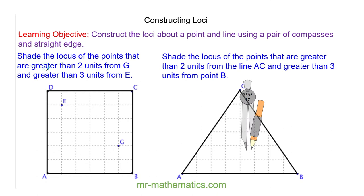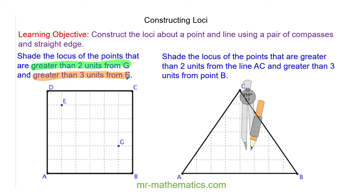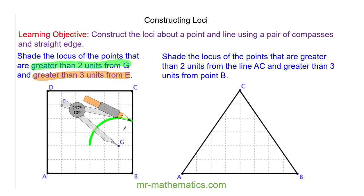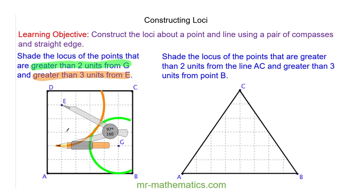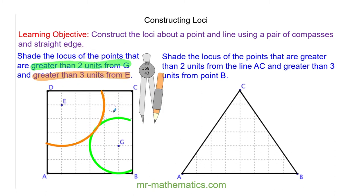We are going to shade the locus of the points that are greater than 2 units from G, and greater than 3 units from E. I have opened up the compasses to 2 units from G and now I am going to draw a circle, and a circle of radius 3 units from point E. The locus is greater than 2 from G and 3 from E, so I am going to shade the region outside of the two arcs.